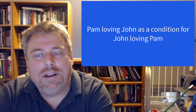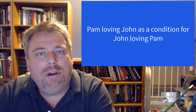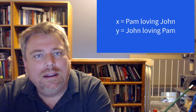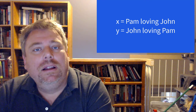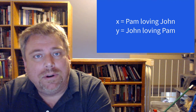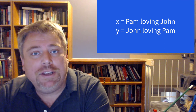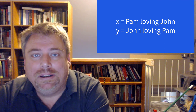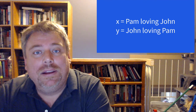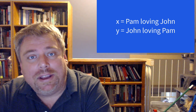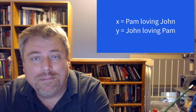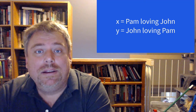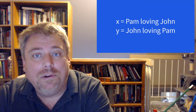How about Pam loving John as a condition for John loving Pam? X is 'Pam loves John'; Y is 'John loves Pam.' If Pam loves John, does that mean John loves Pam? No — unfortunately you can love someone and they don't love you back. So it's not sufficient. If it's false that Pam loves John, is it false that John loves Pam? No. Therefore, this is neither a sufficient nor a necessary condition.